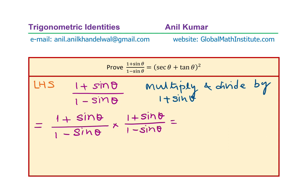In the numerator we get the square of 1 plus sine theta. And in the denominator we get 1 minus sine theta times 1 plus sine theta — we are multiplying and dividing by 1 plus sine theta on both sides.